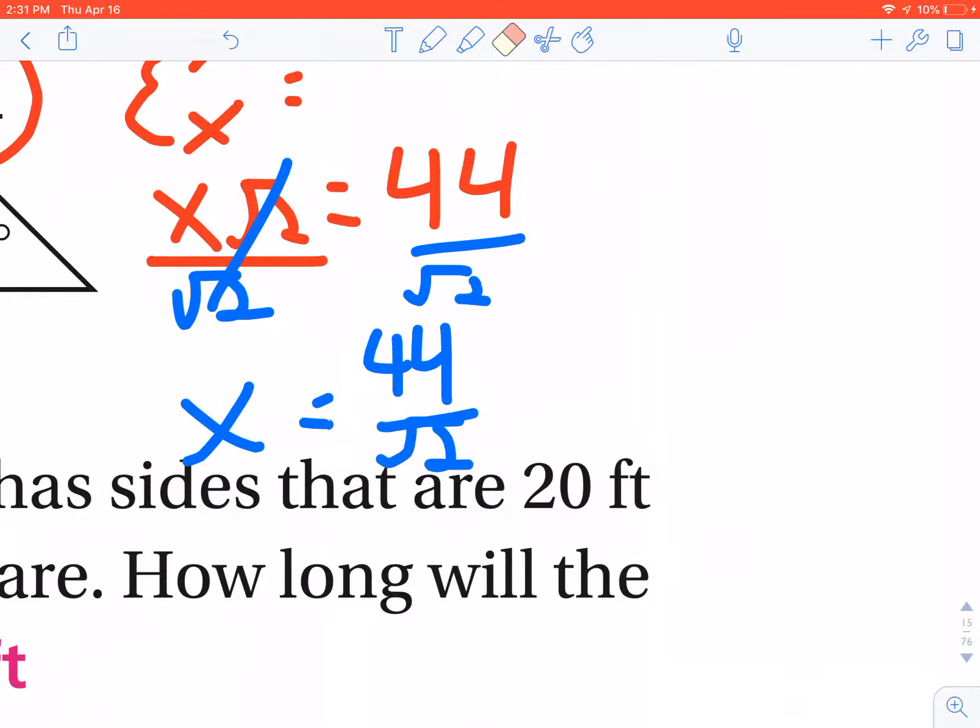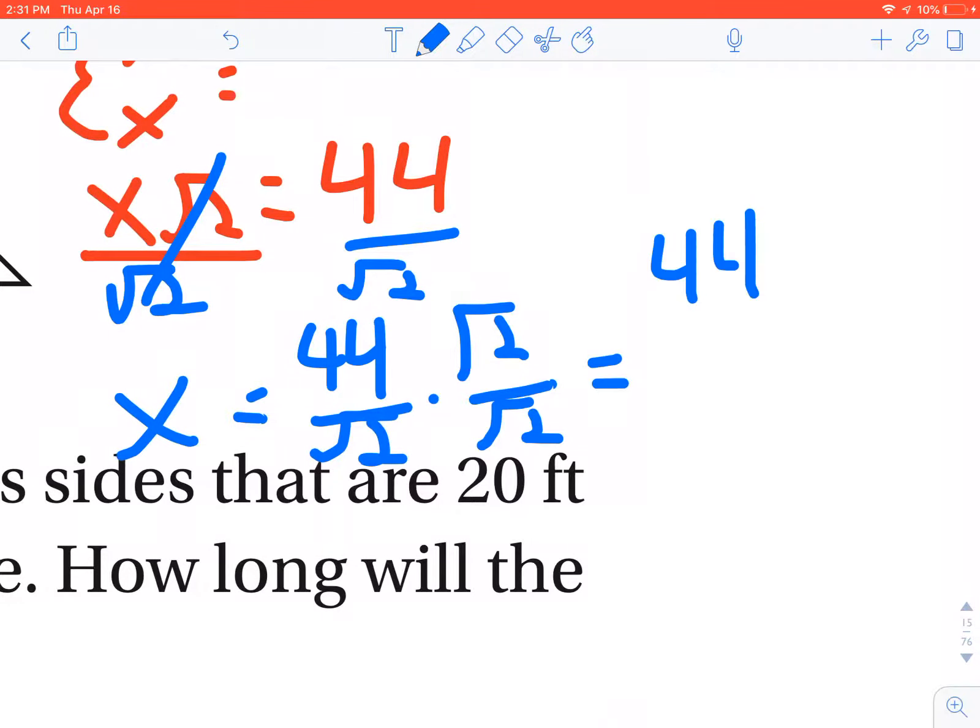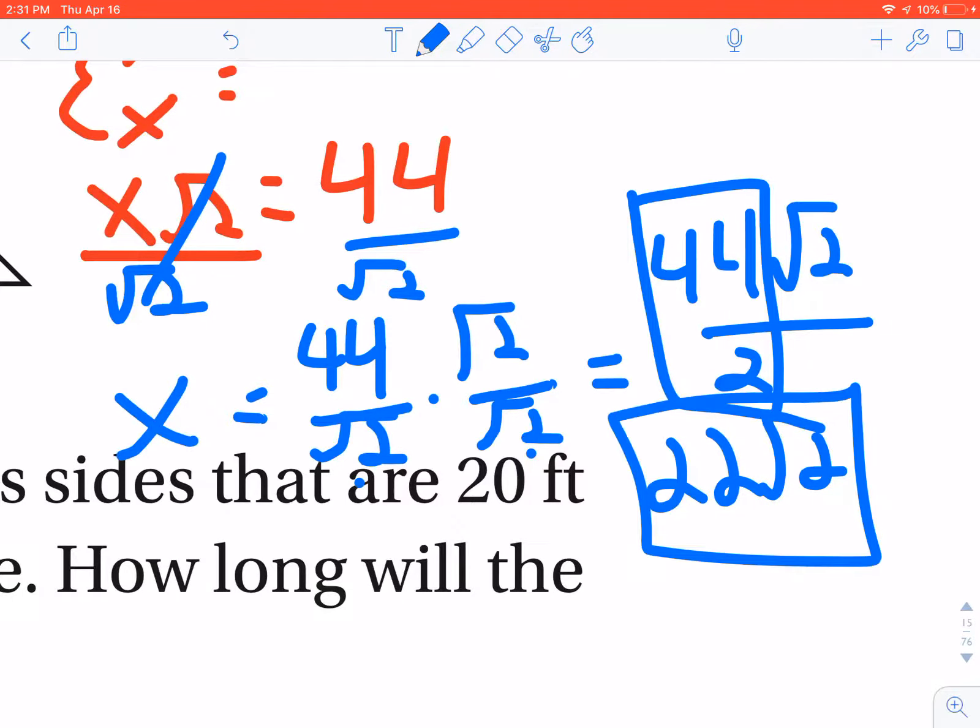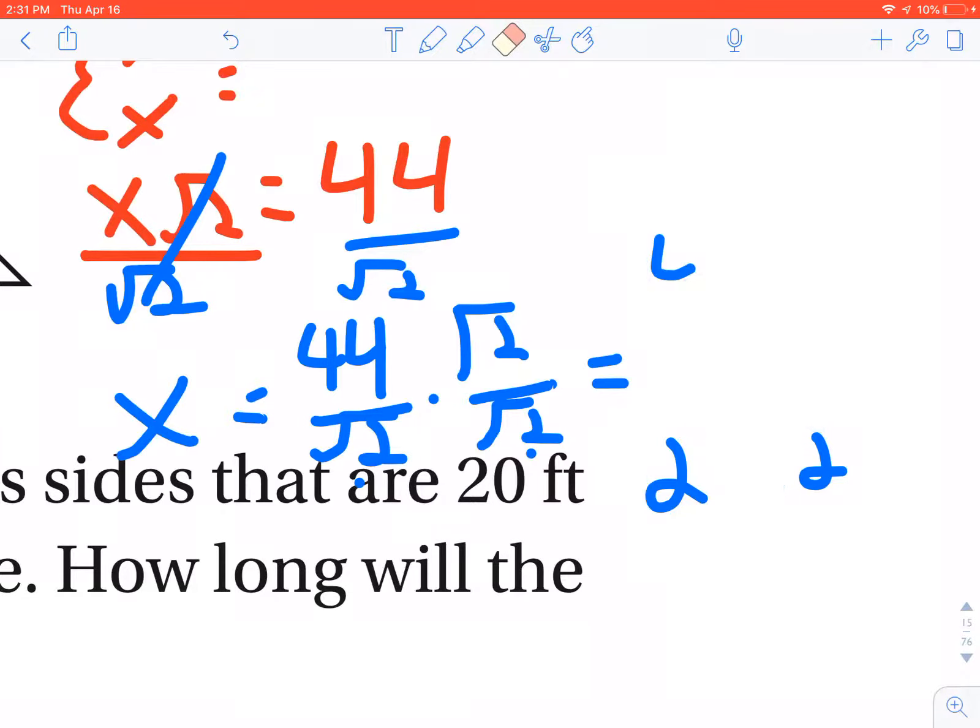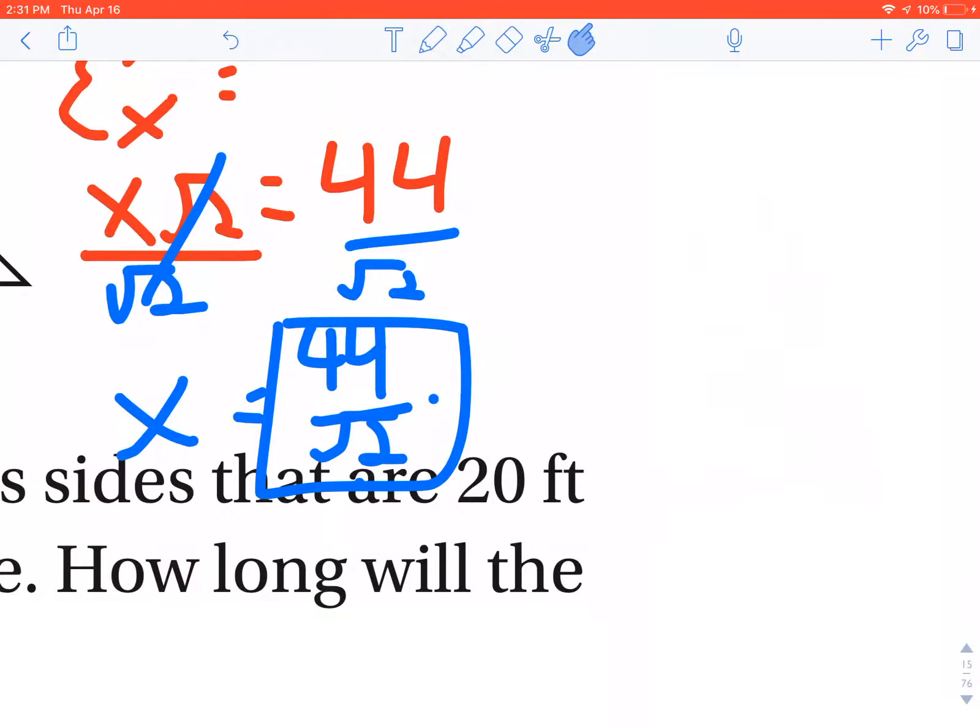The reason why the answer is what it is, is you need to rationalize your denominator and multiply your answer by radical 2 over radical 2, which would give you 44 radical 2 over 2. Divide that out, that's how they get their answer. That's what we'd expect if we were face-to-face, but because we are all online, this is the answer I'll accept.